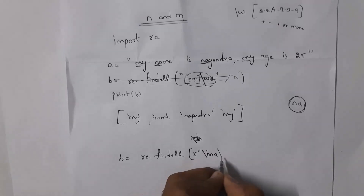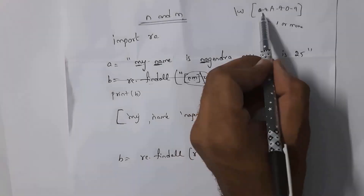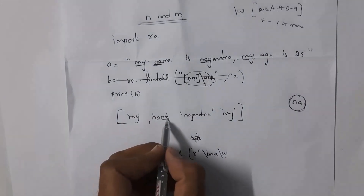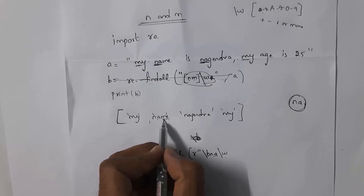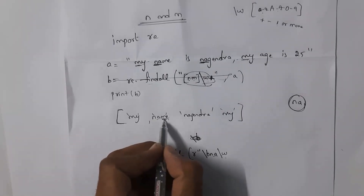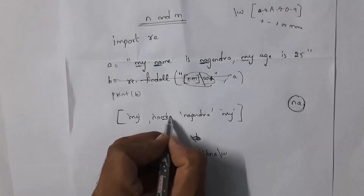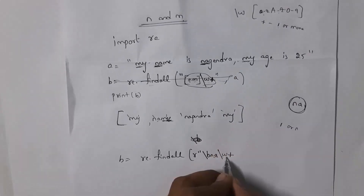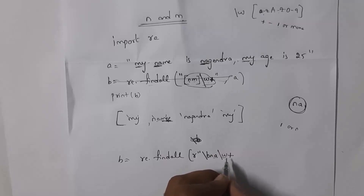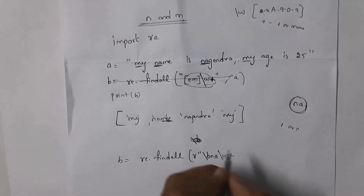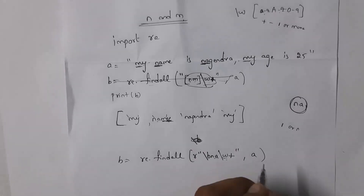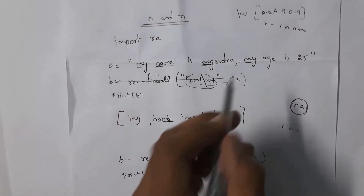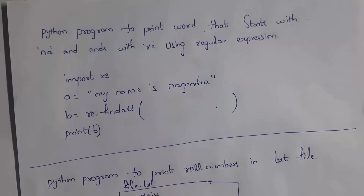After \bna, write \w+ — \w represents a-z, A-Z, and 0-9. The + means even if characters repeat multiple times, the full word will be captured. The string is in variable a. When you print b, the output will be words starting with 'na': name and nagendra. This is the program to find words starting with a specific prefix.